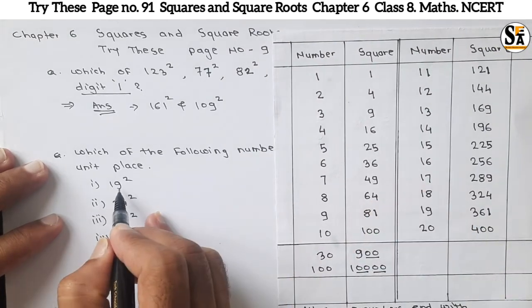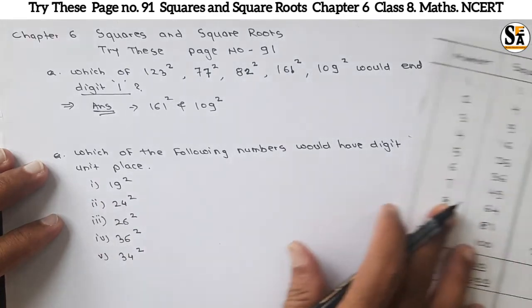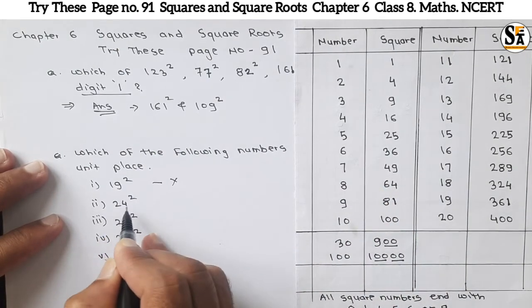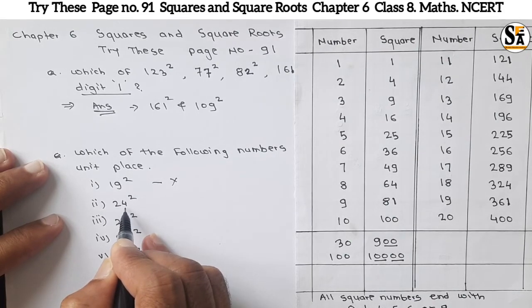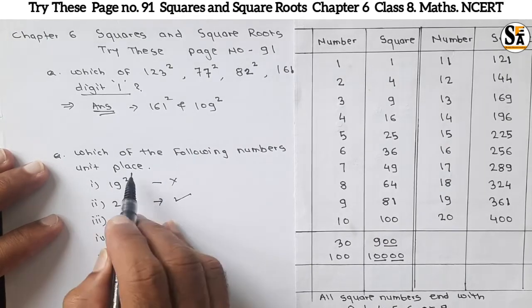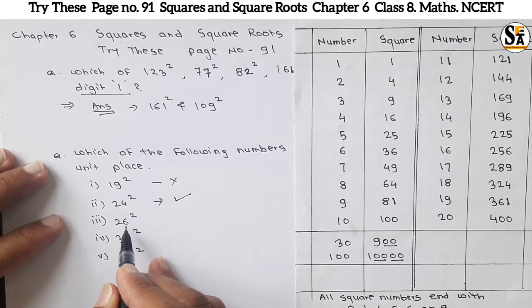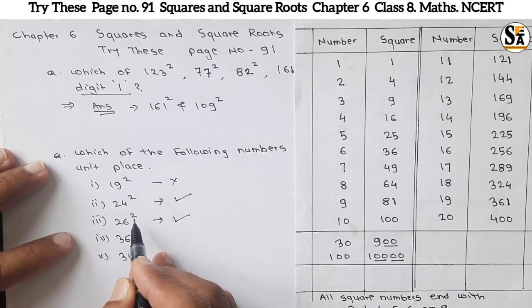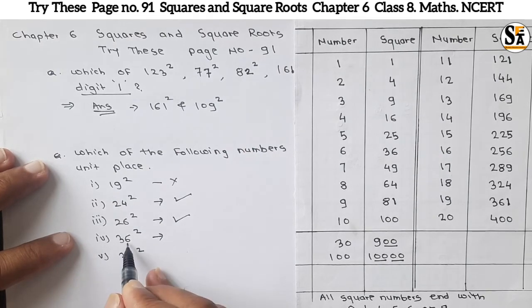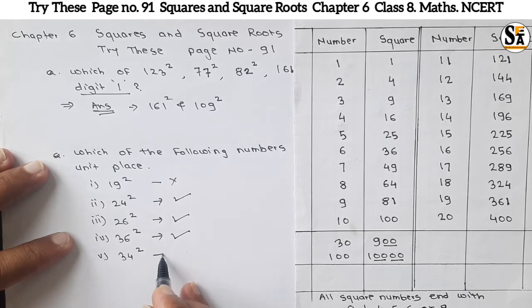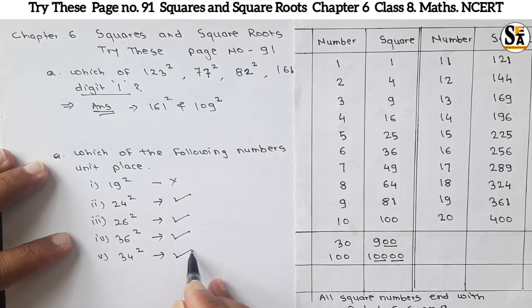Apply this rule: 19 has unit place 9, so its square unit place will be 1 — not 6. For 24, unit place is 4, so we get unit place 6 in the square — 24 is an answer. For 26, unit place is 6, so 26² will also have unit place 6 — another answer. For 36, unit place is 6, so 36² ends in 6. For 34, unit place is 4, so 34² also ends in 6. These are the four answers: 24, 26, 36, 34.